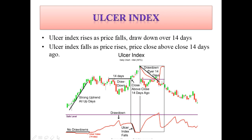Here we have a drawdown over 14 periods, leading the Ulcer Index to increase, because it measures the depth of the price fall. So the Ulcer Index rises as the price falls and the drawdown extends over 14 days, and it falls as the price rises and closes above the 14-day closing high.